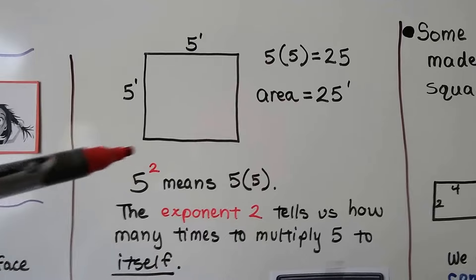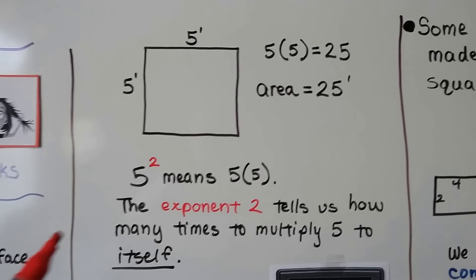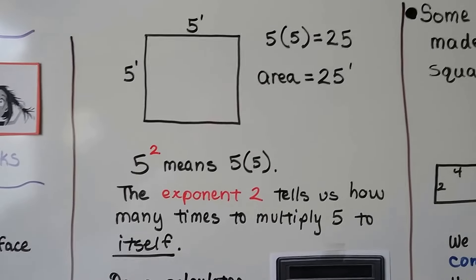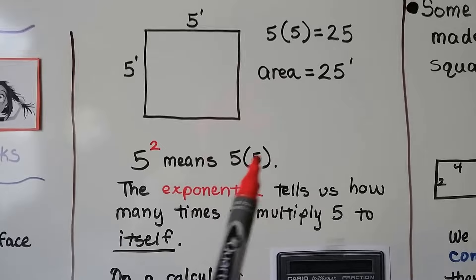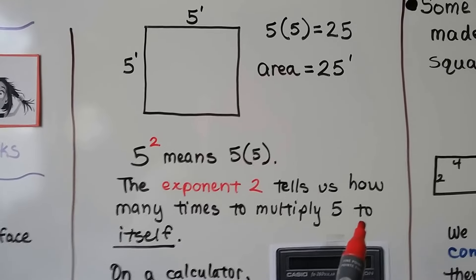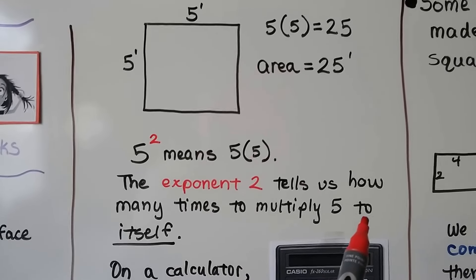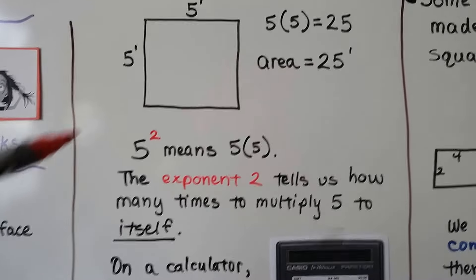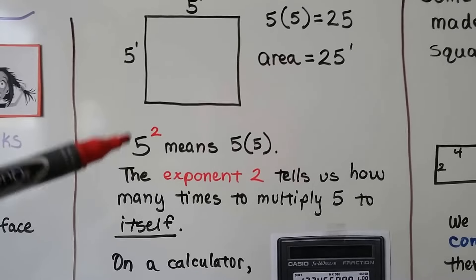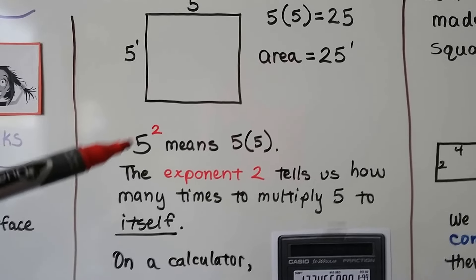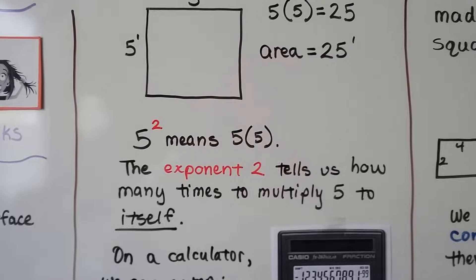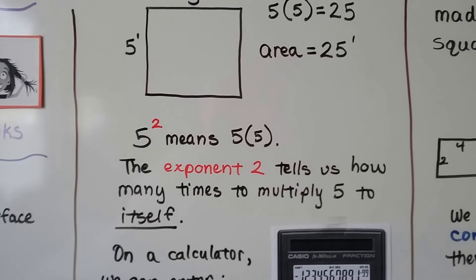There's a little 2 exponent here. This little 2 exponent tells us how many times to multiply 5 to itself — not by itself, to itself. Just remember, we don't do 5 times 2. It tells us how many 5s we're multiplying. So that's 5 times 5 — there's 2 of them.